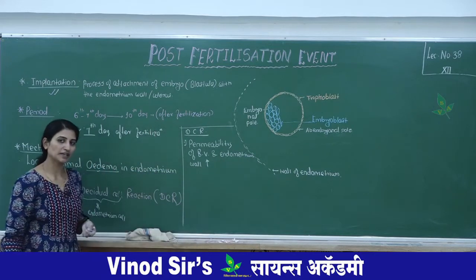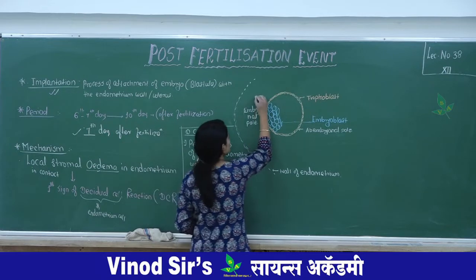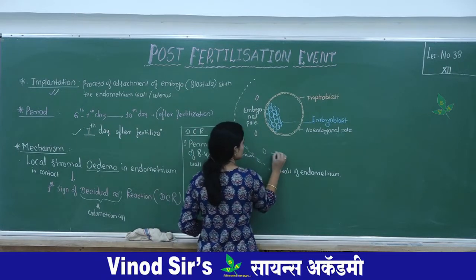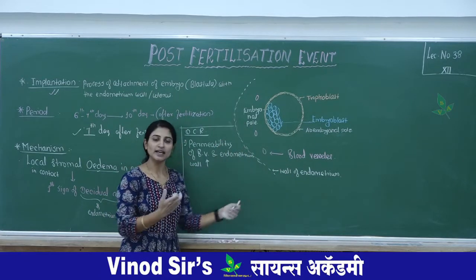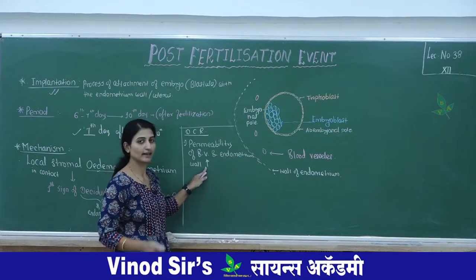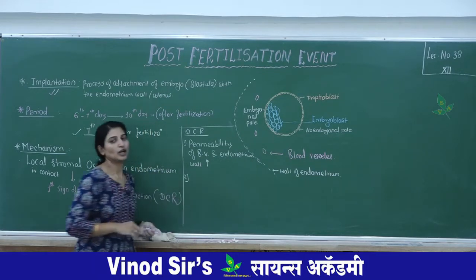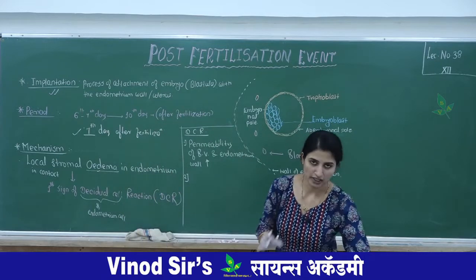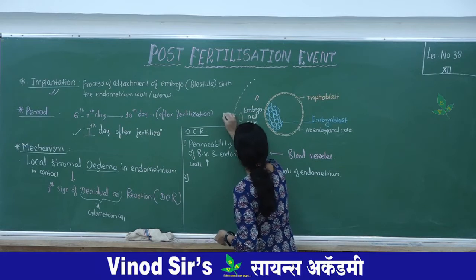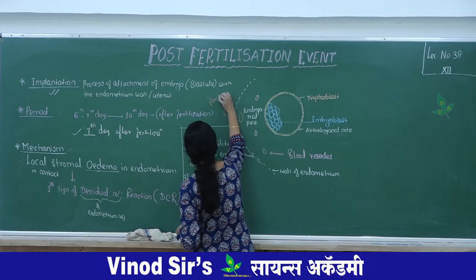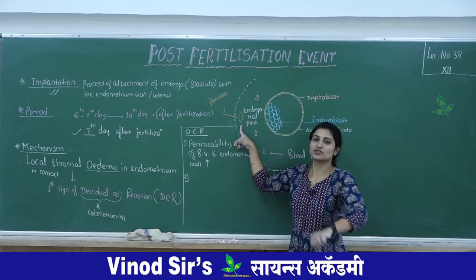The permeability of blood vessels and the wall of the endometrium increases. Increased permeability allows substances from blood vessels to access the endometrium wall. The second change involves fibroblast cells: these fibroblast cells absorb nutrition and form fluid-filled cells, so the fibroblast cell now looks like a bulging cell.